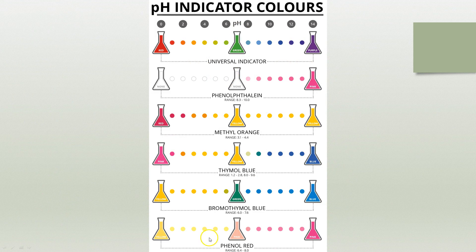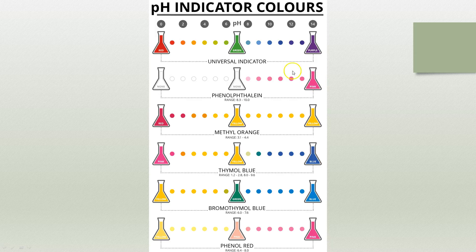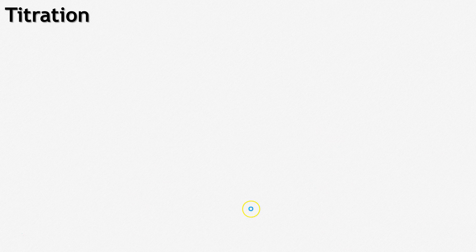Here are some other indicators. Phenolphthalein is the one that we're going to see a lot — it goes from clear to nuclear pink, a beautiful bright pink. Universal indicator is what they use for a lot of pH paper; it goes from red to green to blue, along with some other indicators out there.